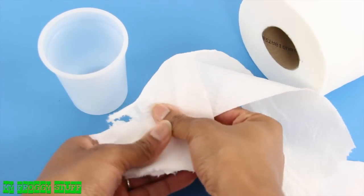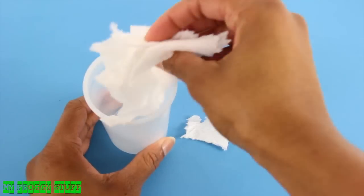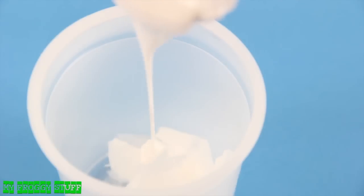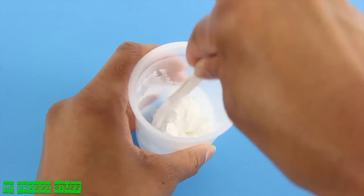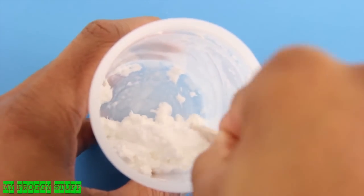I start by tearing the toilet paper into small pieces. Place them in a plastic container, add a little water and glue. Then mix well until it has the consistency of mashed potatoes.